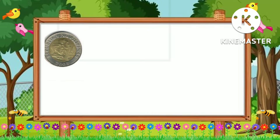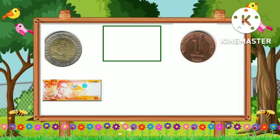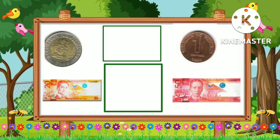The next example is 10 pesos and one centavo — 10 pesos is greater than one centavo. Another example is 20 pesos and 50 pesos — 20 pesos is less than 50 pesos.